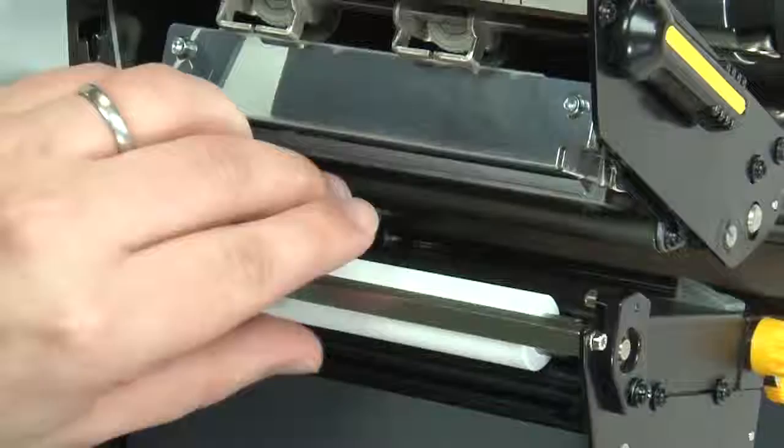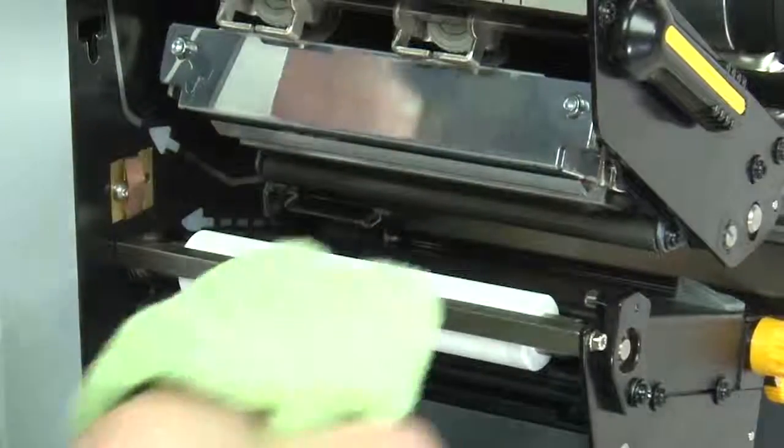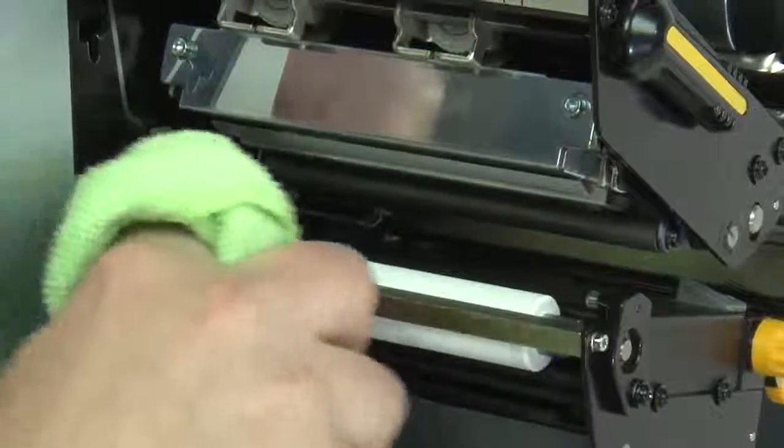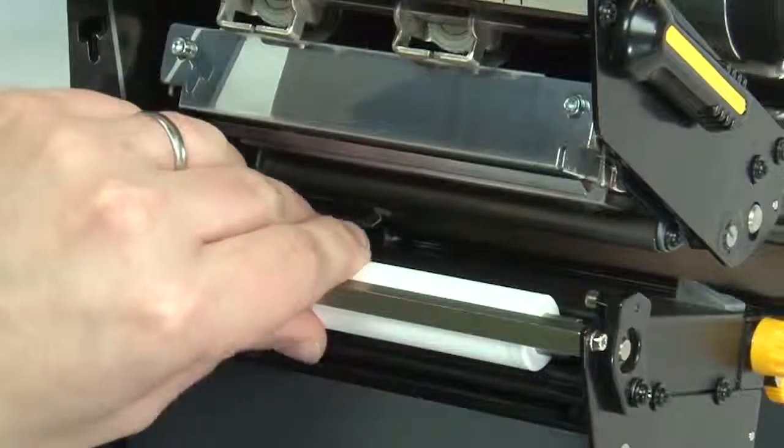To clean the platen roller, wipe with a lint-free cloth or swab dipped in 99.7% isopropyl alcohol. Allow the solvent to evaporate.